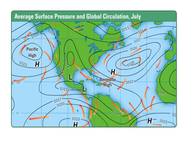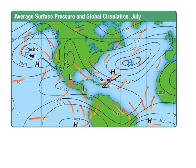Putting it all together, our map shows regions of highs and regions of lows. We have high pressure systems and low pressure systems, and remember wind blows in the general direction from the high to the low. This gives us kind of a global circulation pattern — for example, showing how it works out for July.